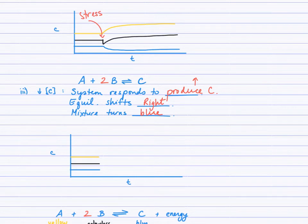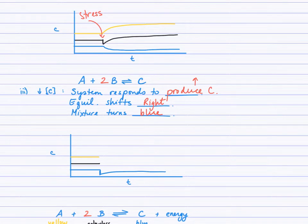To illustrate that on the graph, we show C being decreased instantaneously — that's the blue curve dropping. Then as a result, C increases back, and A and B decrease to their new plateau values.